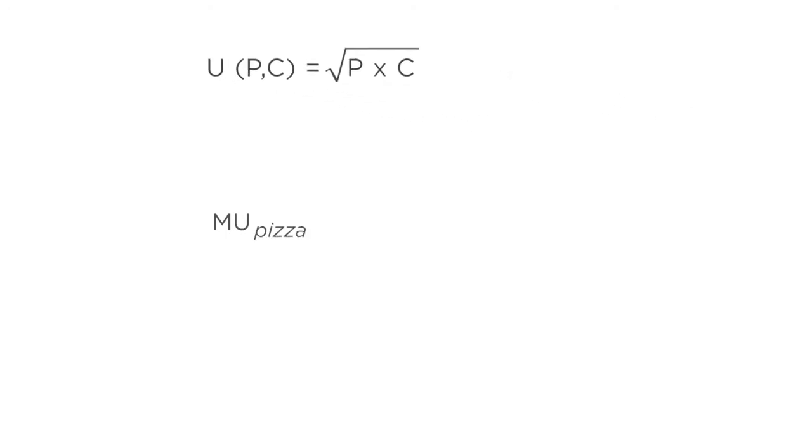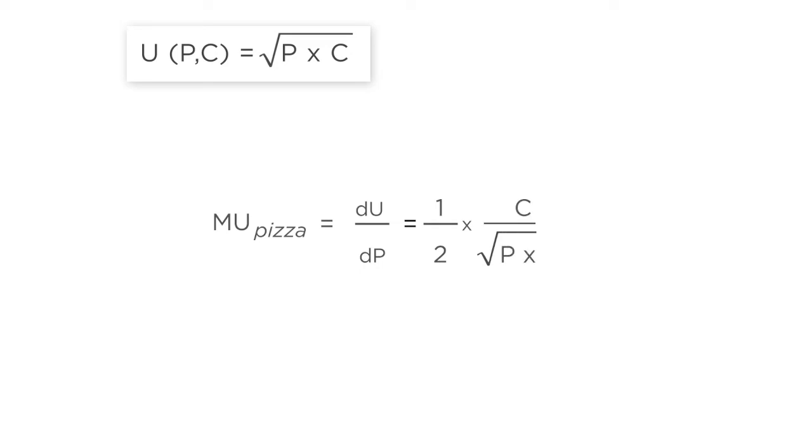The marginal utility of pizza is just the derivative of the utility function with respect to p. The derivative of the function u with respect to p equals 1 half c divided by the square root of p times c.